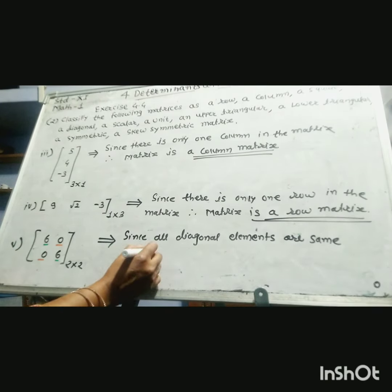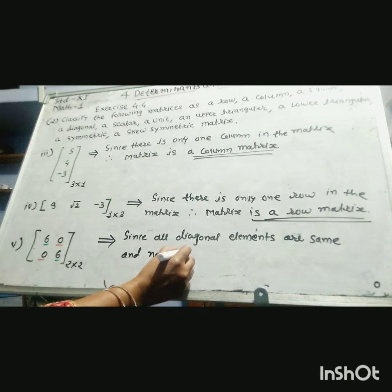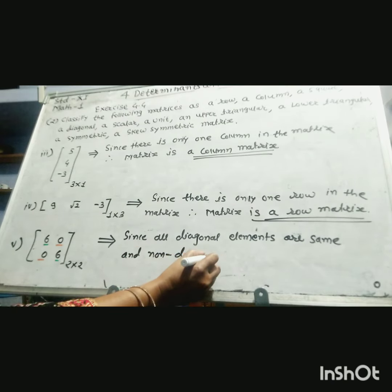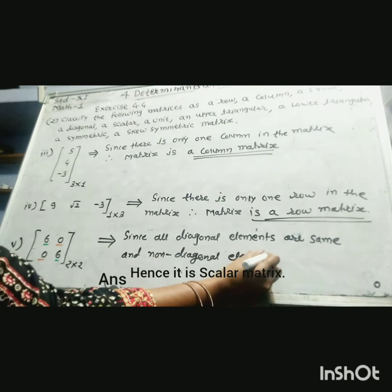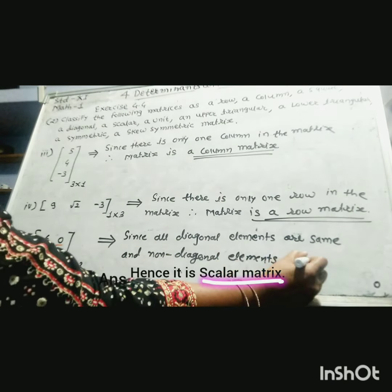These elements — 6 and 6 — are the diagonal elements. Since all diagonal elements are the same and all non-diagonal elements are zero, this is a scalar matrix.